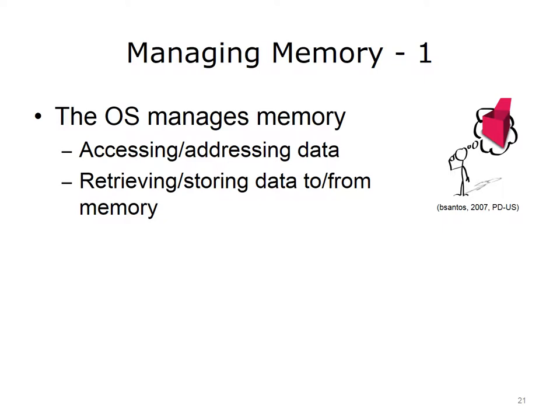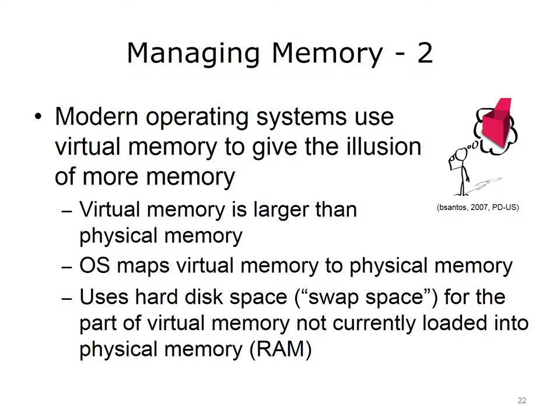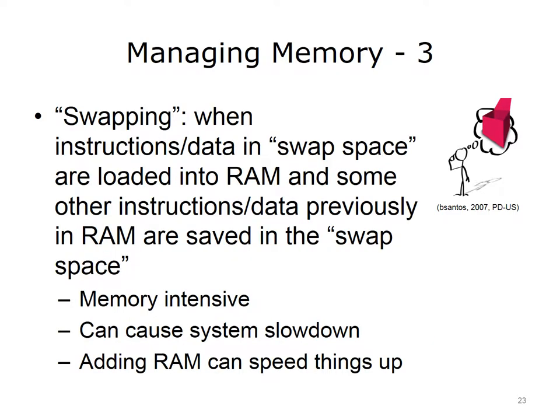The OS manages accessing memory through memory addresses and retrieving or storing data to or from memory. Even though the amount of RAM on most modern computers is rather large, it is still limited. To give the illusion of unlimited memory, modern operating systems use virtual memory, which is much larger than physical memory. The OS manages mapping the virtual memory to physical memory, using hard disk space called swap space for that part of memory not currently loaded into RAM. Ideally, the processes in swap space are inactive. Swapping occurs when a process's instructions and/or data are loaded from swap space into RAM, and some other instructions or data are then saved to swap space. This swapping is very time consuming, and a computer running many programs with too little memory will demonstrate significant slowdown. Adding more RAM to the computer can help speed things up.